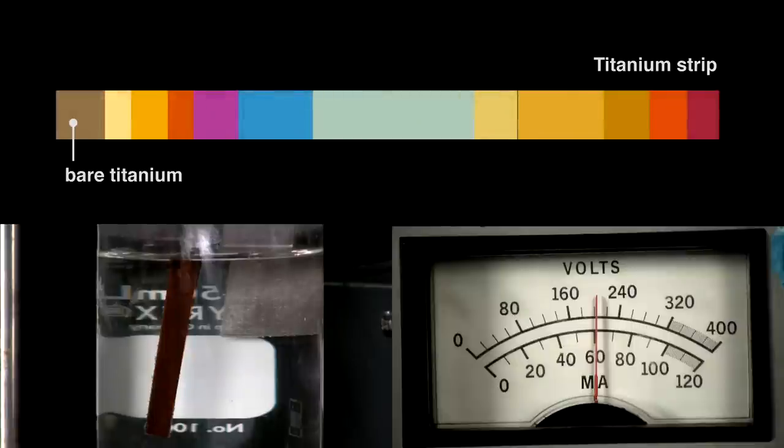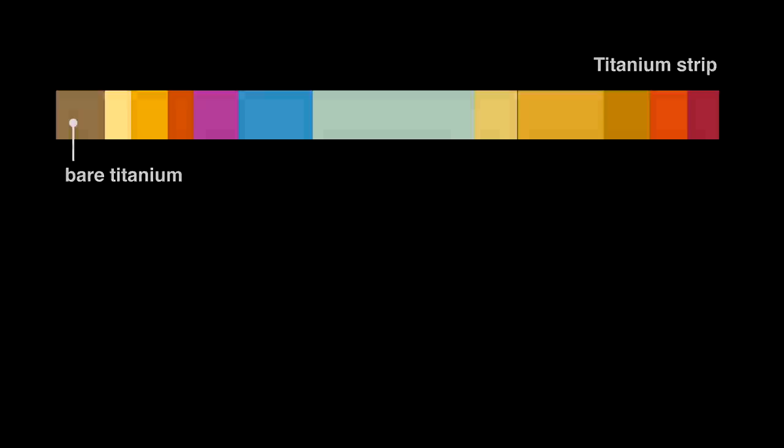If we look at the strip I created from the side and exaggerate the scale, we can see that each color corresponds to an oxide layer of a different depth. The color comes from the interference of light rays that bounce off the titanium surface at the bottom of the transparent oxide and those that reflect from its surface.